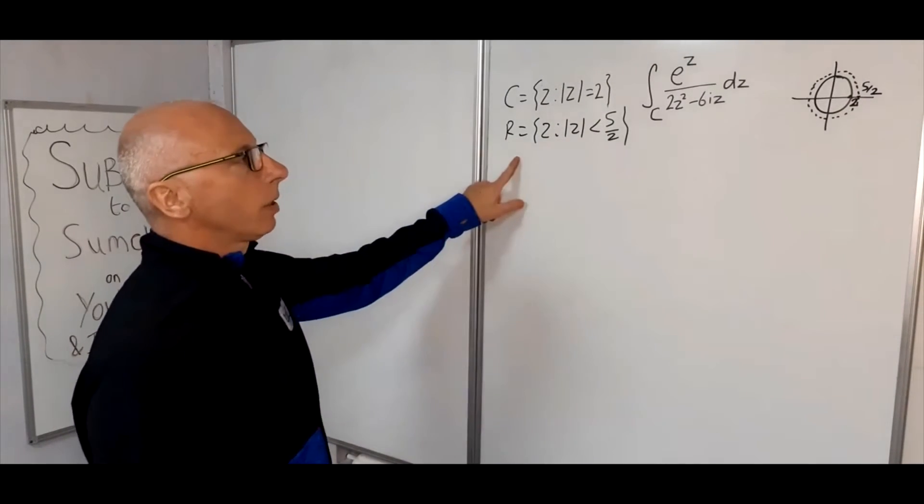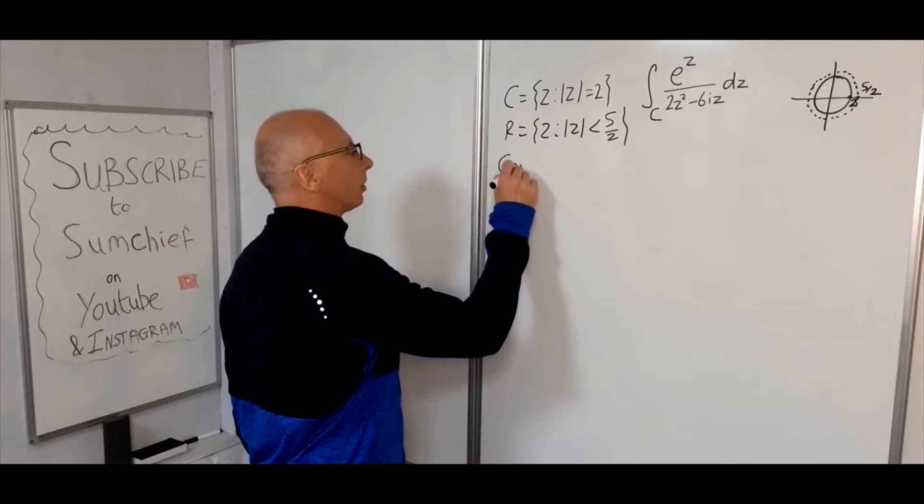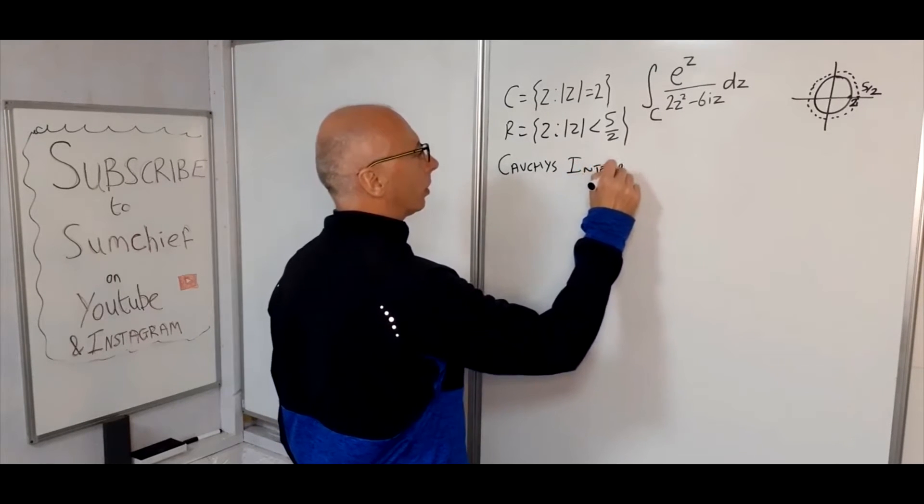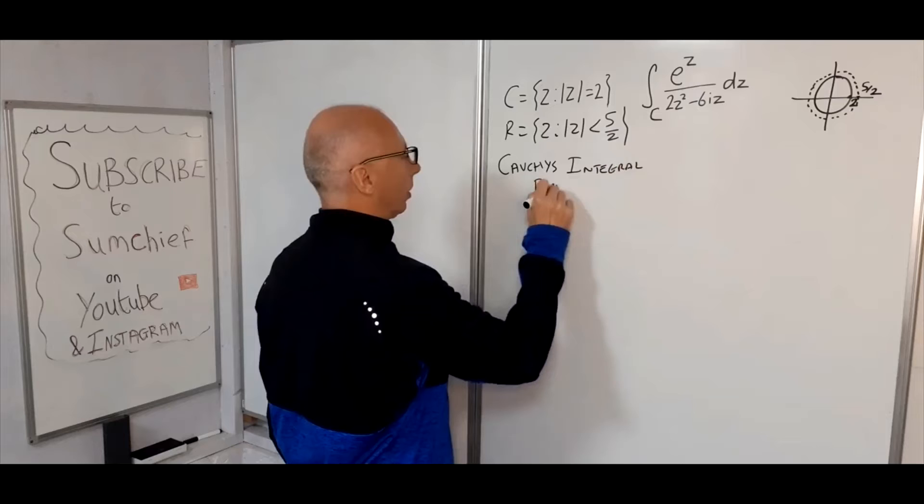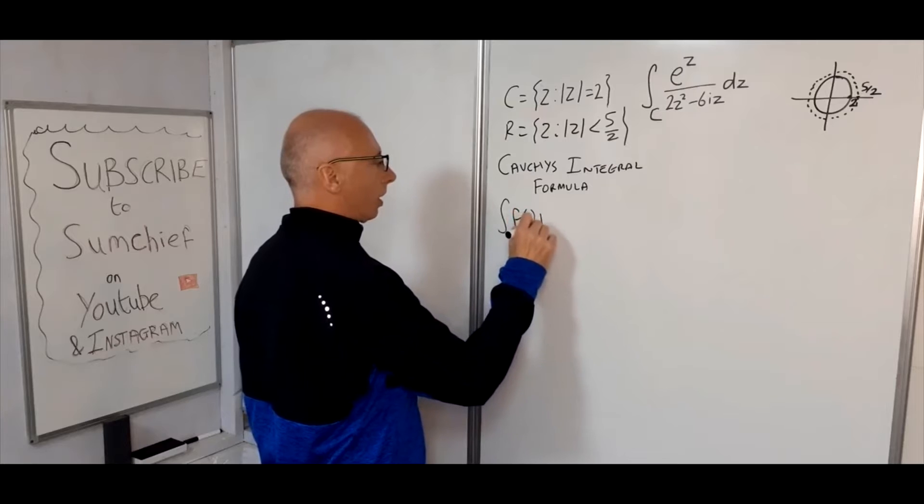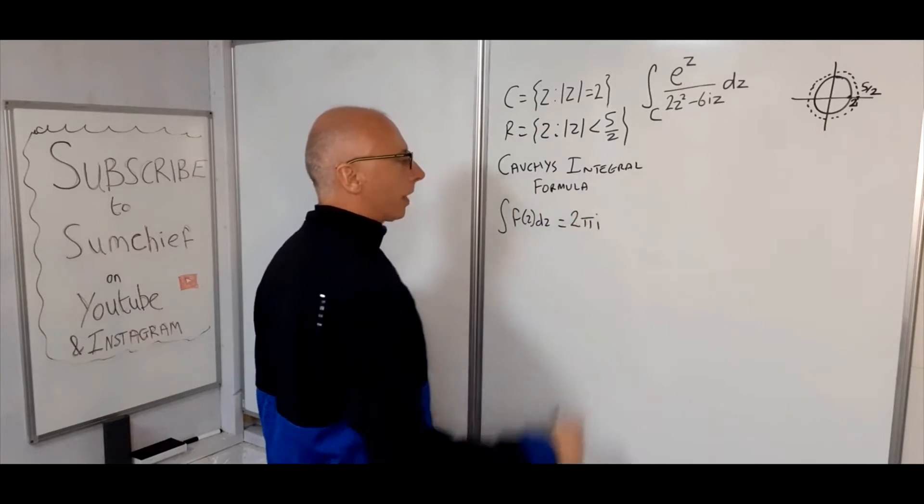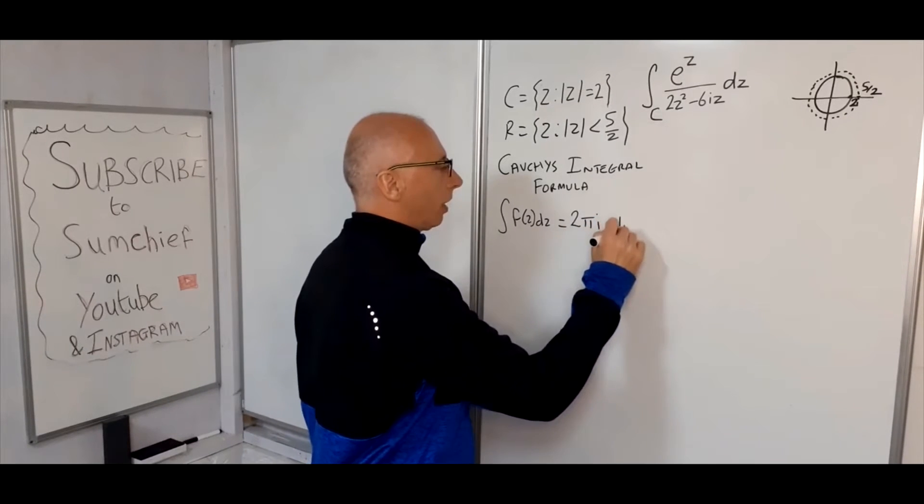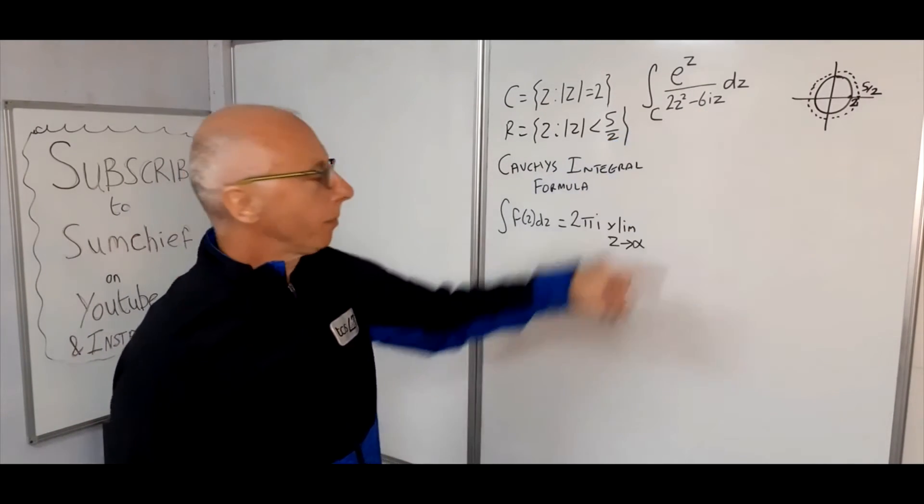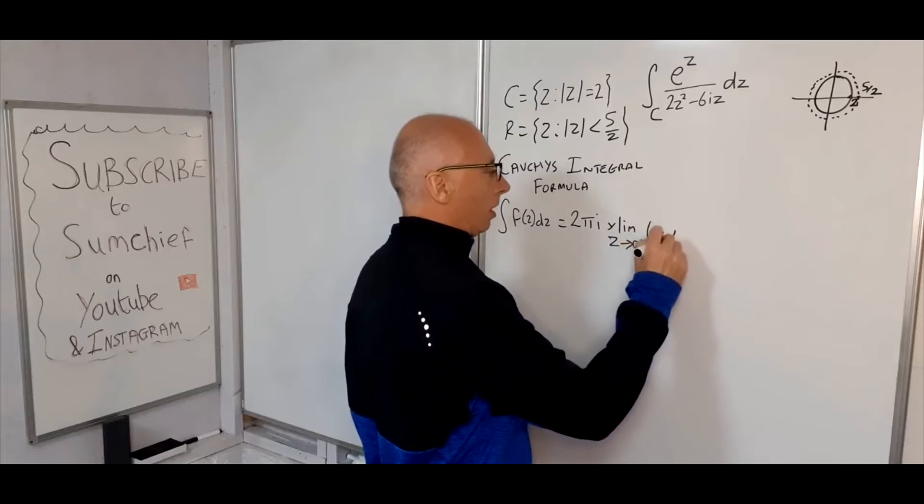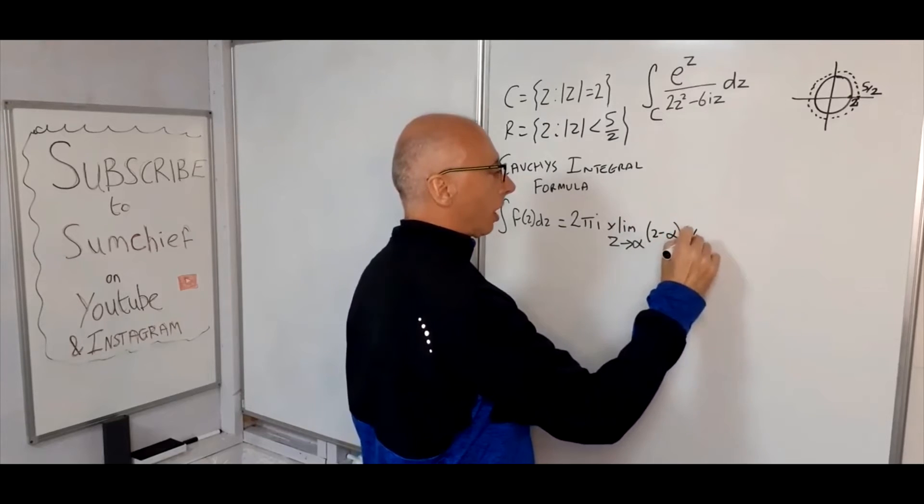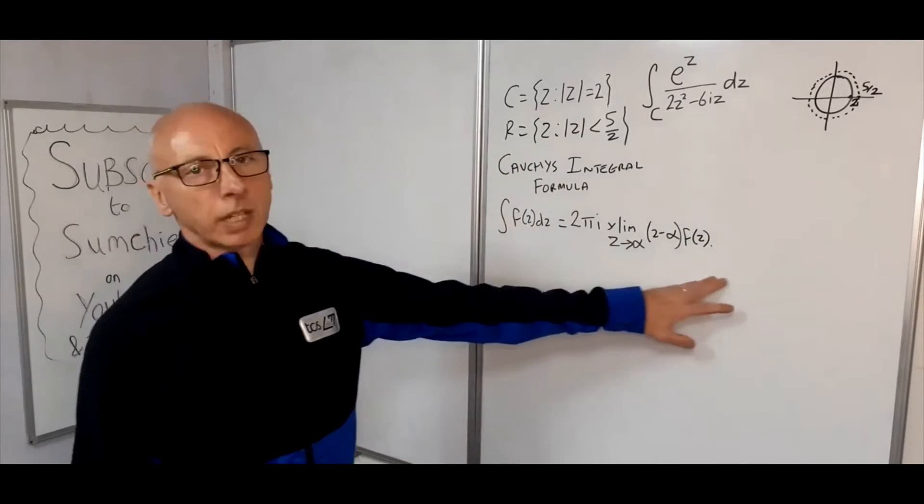Okay, so now Cauchy's integral formula is done like this. So let's say we get an in function and we're going to integrate. It basically equals 2πi and then we'll multiply it by the limit as z approaches α, where α is a singularity which we're going to find in a minute. Multiply by z minus α, that will basically eliminate the singularity from the function, times f of z. And that's how we work out Cauchy's integral formula.